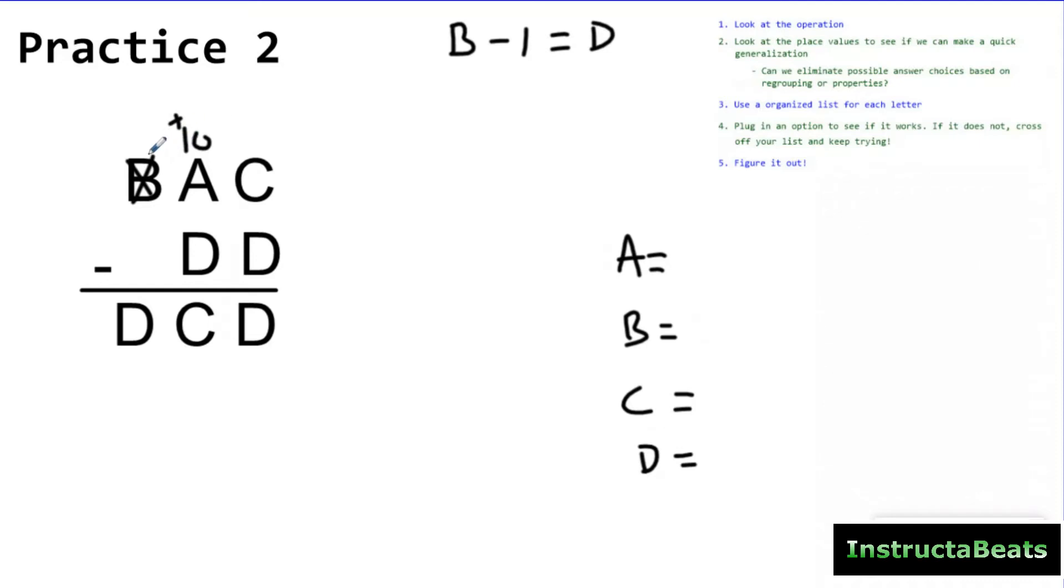And this might not help me, but it's still a generalization I want to think about. When I regrouped and gave 10 more over here, it left me with a D because D minus zero would be D. So just thinking about that might help me later down the road. I also know another thing right off the bat, just a generalization. I know that because I had to regroup here, that means D had to be bigger than A. So whatever D is, it has to be a larger digit than A. So I'm going to put over here, just kind of on the side, D is greater than A.